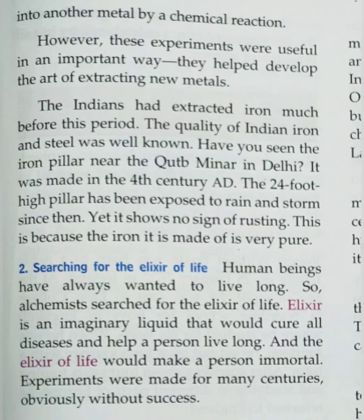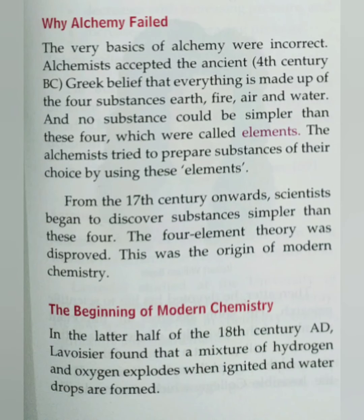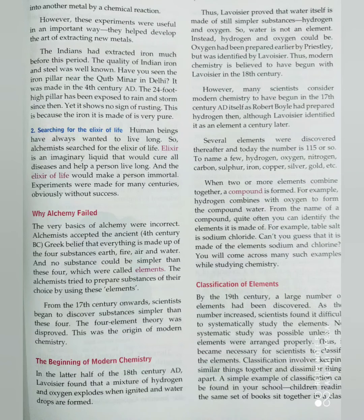So alchemy failed. An important reason for the failure of alchemy is that the alchemists believed everything is made up of four substances: earth, fire, air, and water, and that no substance could be simpler than these four. They named these four substances as elements and called this the four element theory. But from the 17th century onwards, scientists began to discover many substances simpler than earth, fire, air, and water — and so the four element theory was disproved.